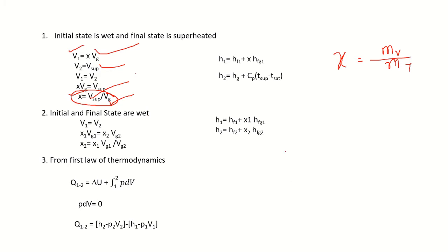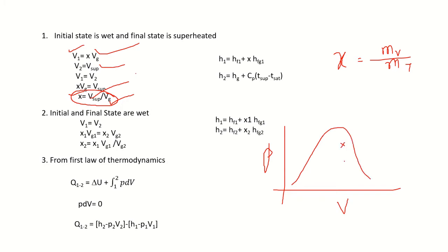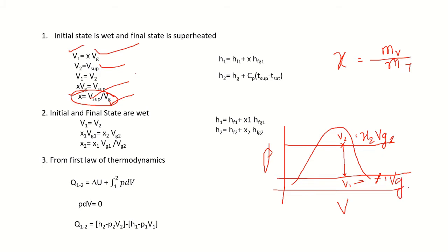If both the initial and final states are wet, the diagram shows state 1 at one pressure and state 2 at another pressure on the PV diagram. We have V1 = x1·Vg1 and V2 = x2·Vg2, and since it is a constant volume process, both volumes are equal. The values of Vg1 and Vg2 can be obtained from the property tables, and if we know the dryness fraction at one point we can find the dryness fraction at the other point.